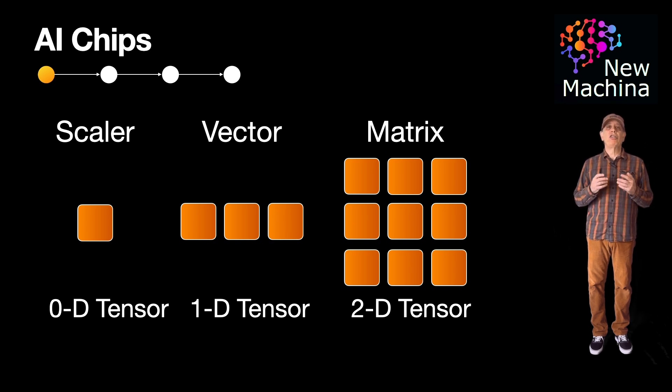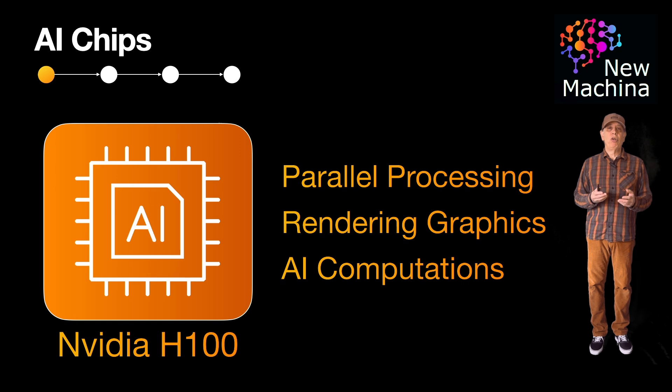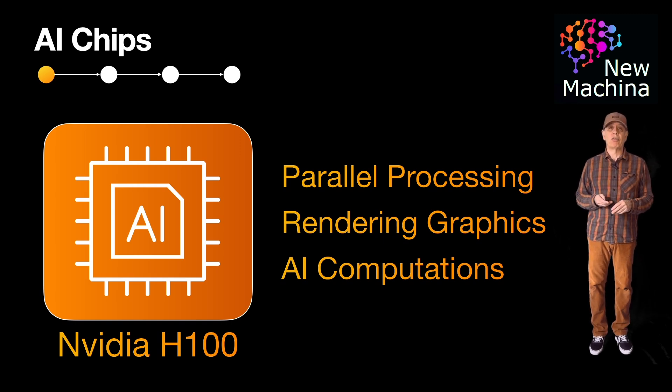So let's first talk about GPUs. A GPU is known formally as a graphics processing unit. NVIDIA's GPU, the H100, is one of the more popular GPUs. The H100 is designed to execute with massive parallel processing, meaning it can handle thousands of simultaneous operations. This is ideal for tasks like rendering graphics or running AI computations.